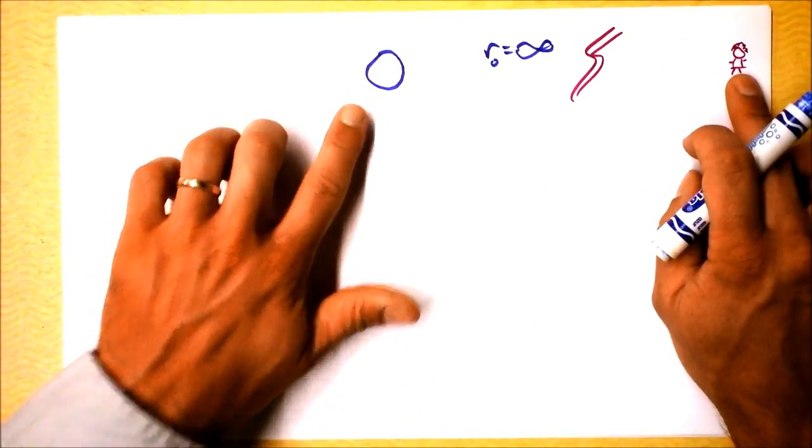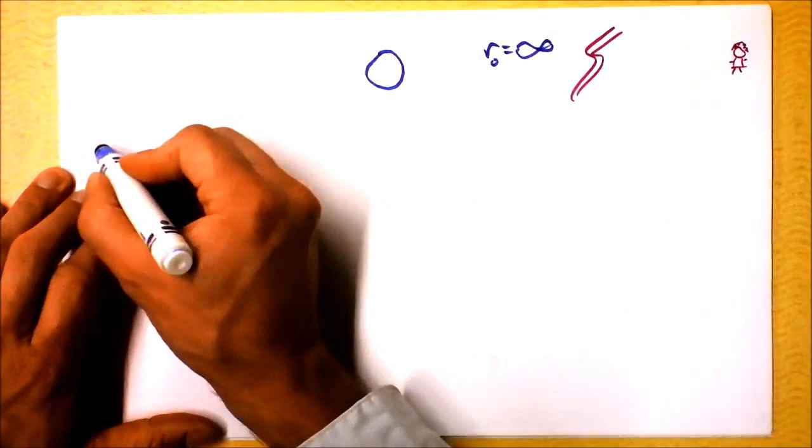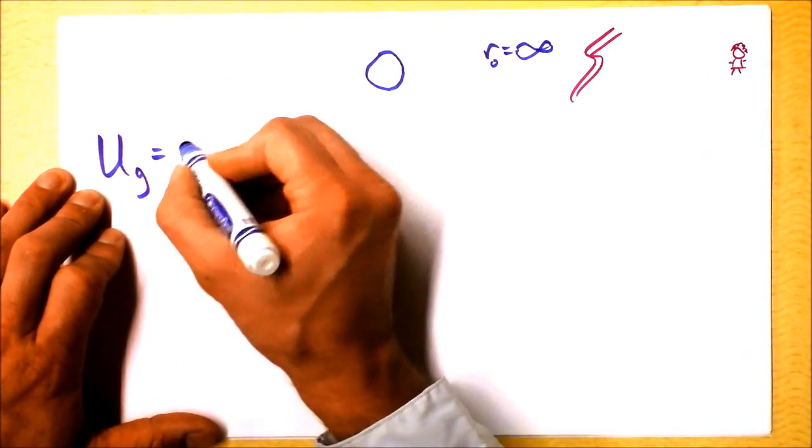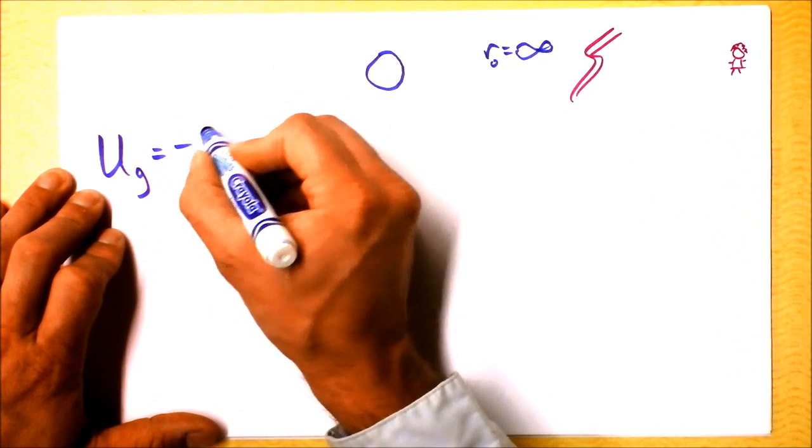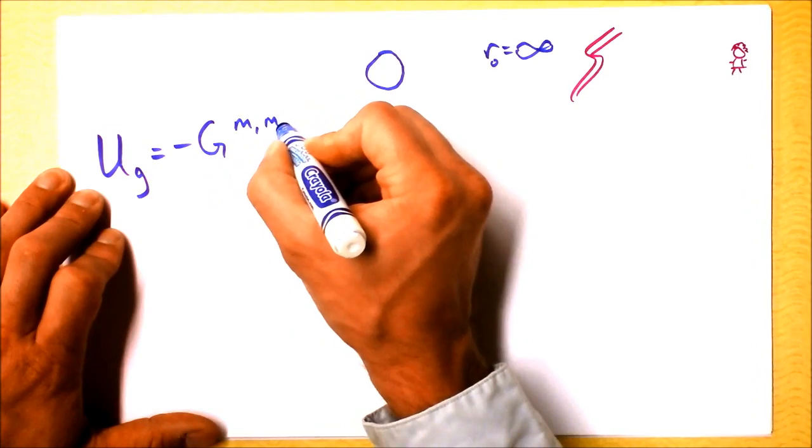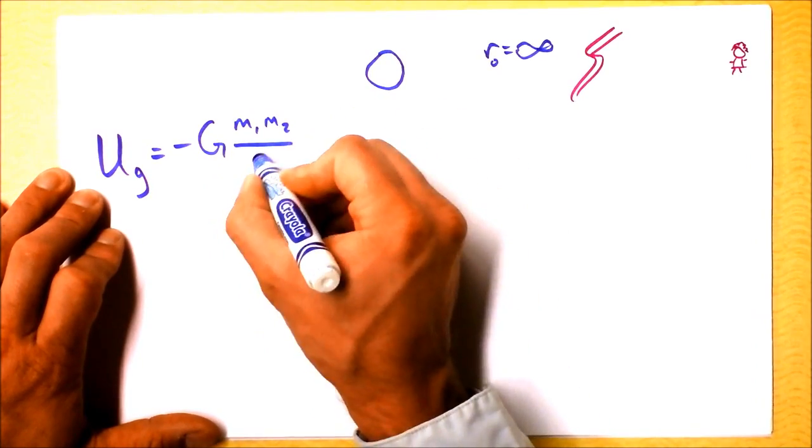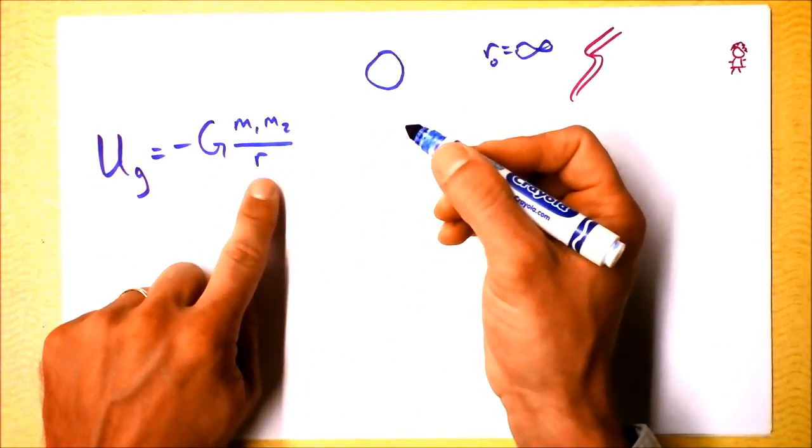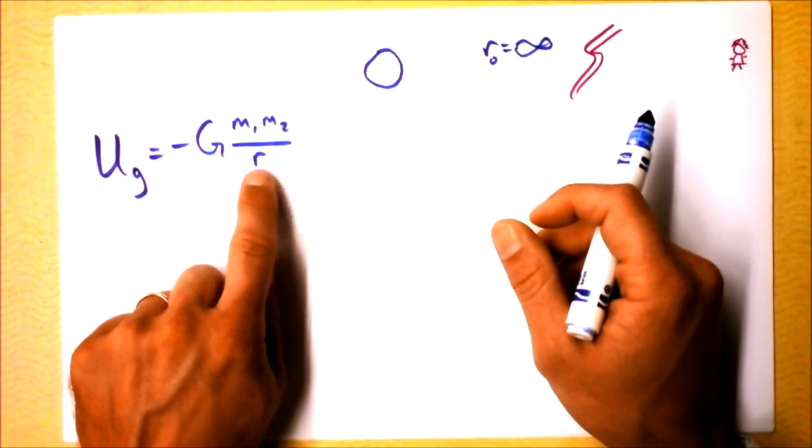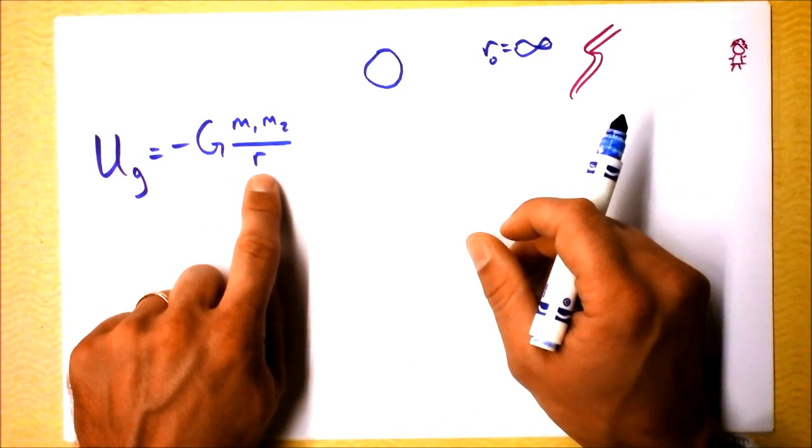We can look at his gravitational potential energy. Newton's initial gravitational potential energy is minus capital G times the mass of Newton times the mass of the Earth, divided by how far apart they are. There's no square here. The square occurs in the force, not in the potential energy, because we're taking an integral to get gravitational potential energy.